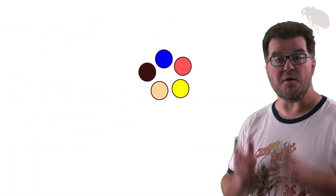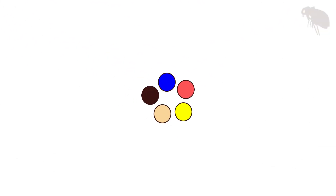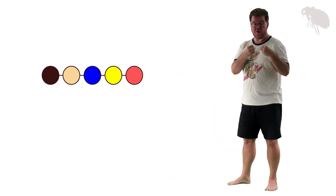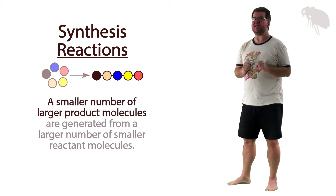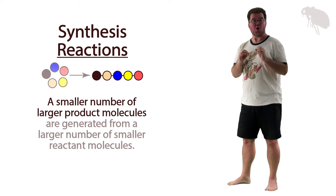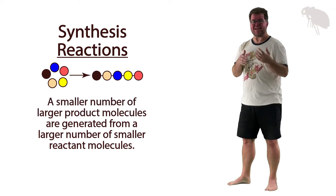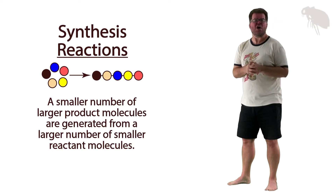I want to go over two examples of types of chemical reactions we encounter fairly frequently in biology. In the first reaction, we start with five small reactants. In the reaction we just saw, we started with a bunch of small reactants and ended up with one larger product. This is called a synthesis reaction — a relatively small number of larger product molecules are produced from a relatively large number of small reactant molecules. In cells, this is used for constructing molecules like proteins and DNA.